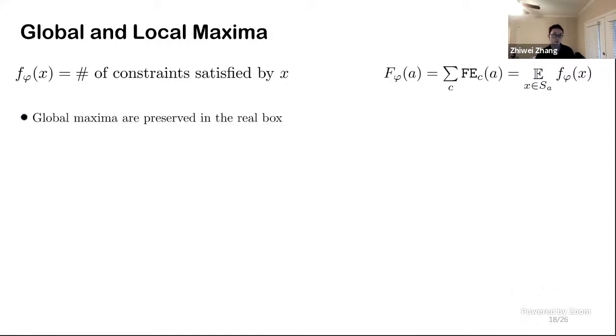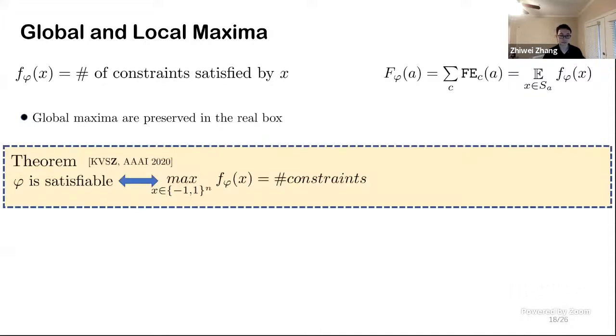The first thing I want to tell you here is about global and local maxima. Another contribution we made is to prove global maxima are all preserved in real box. What do I mean by that? Let's first consider the scenario in discrete local search. In discrete local search, phi is satisfiable if and only if the maximum of the discrete objective value is the number of constraints.